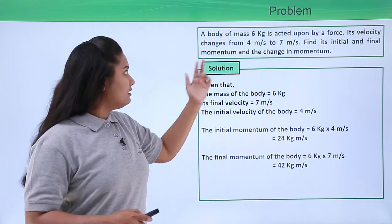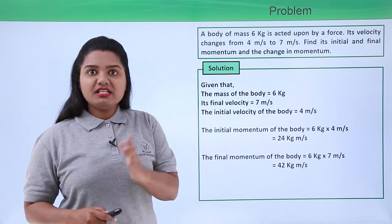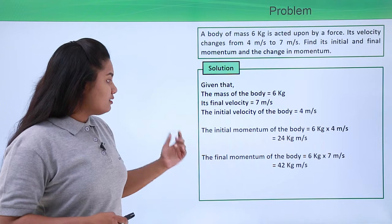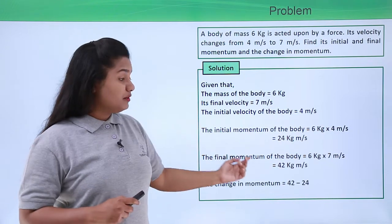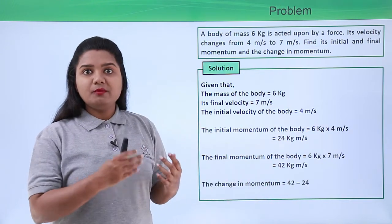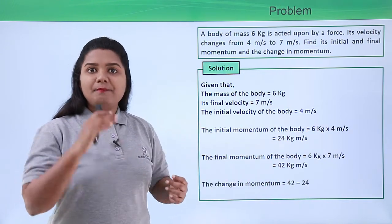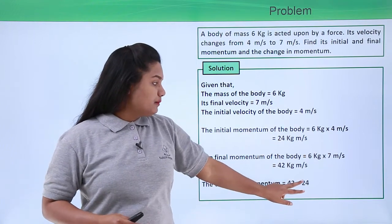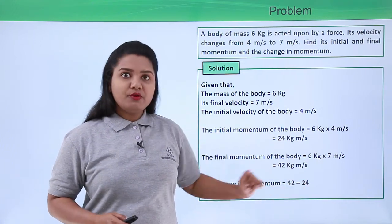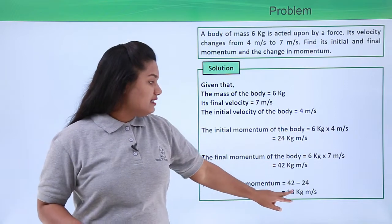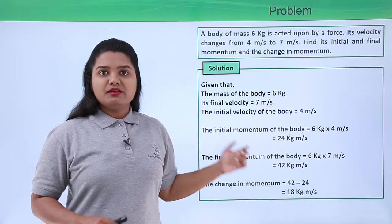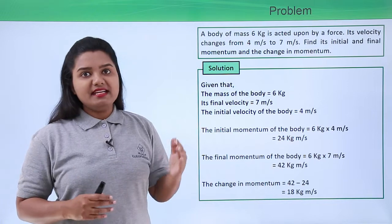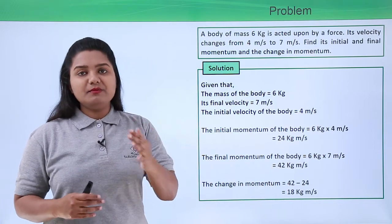Now the third thing we need to find is the change in momentum. The change in momentum of the body is equal to the final momentum minus the initial momentum. So 42 minus 24 yields 18 kg meters per second. The change in momentum of the body is found to be 18 kg meters per second.